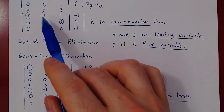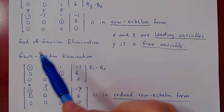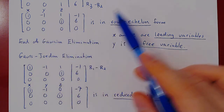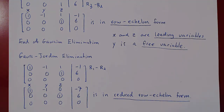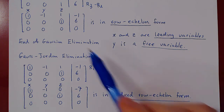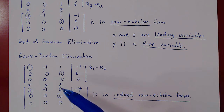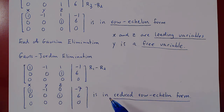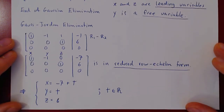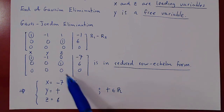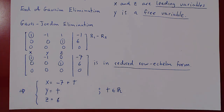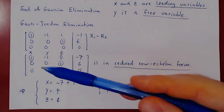Every time you have one or more free variables, don't use backward substitution as this will require more algebra involving the parameters. Instead, use Gauss-Jordan elimination — introduce zeros above each leading one — and once you have completed Gauss-Jordan elimination you can always write the solution set in its final fully simplified form with no extra algebra required. This is why we prefer Gauss-Jordan elimination when we have free variables.